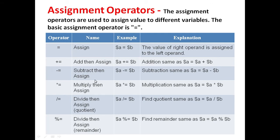Minus equal to means subtract and then assign — same as a equals a minus b. Multiplication equal to means multiply and then assign — same as a equals a multiplied by b. Divide and then assign finds the quotient, same as a divided by b. Modulus equal to divides and finds the remainder, same as a equals a mod b.